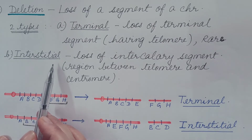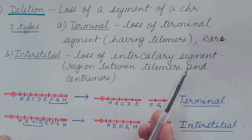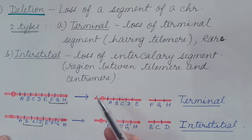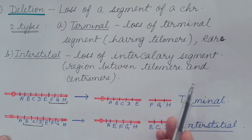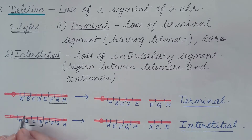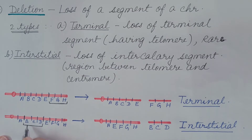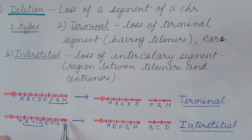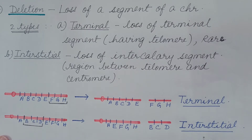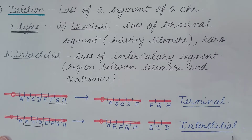Second is interstitial deletion — the loss of an intercalary segment of a chromosome, that is the region present between the telomere and centromere. In a normal chromosome, if breakage occurs at two points and the region B, C, D is lost, and this region is present between the centromere and telomere (intercalary), this type of deletion is known as interstitial deletion.